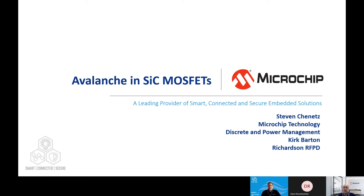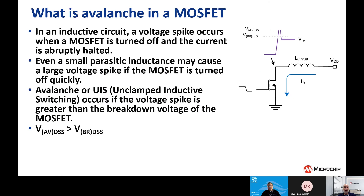So Steve, what is avalanche and why does it occur? Avalanche occurs in a MOSFET when the voltage exceeds the breakdown voltage of that MOSFET, and that usually occurs in an inductive circuit. When you build up energy in a parasitic inductance of a circuit and you're switching it on or off, you'll get a voltage spike because the energy in the inductor has to go somewhere. It goes into the MOSFET capacitance, builds up voltage until it exceeds the breakdown voltage of that MOSFET, and that's called avalanche.